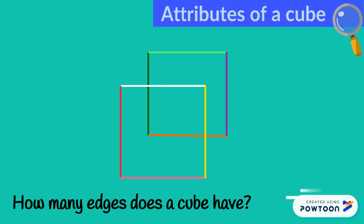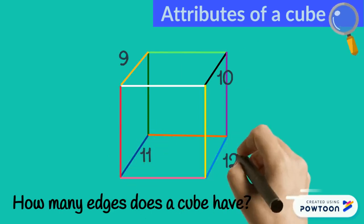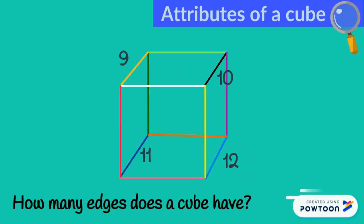We just have to count the side edges on the top and the bottom. Nine, ten, eleven, twelve. A cube has a total of twelve edges.